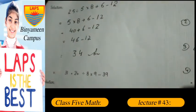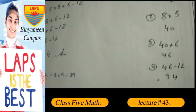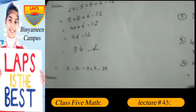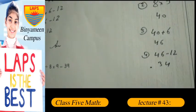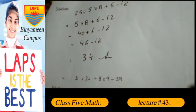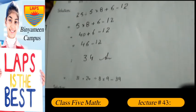Now 40 plus 6 minus 12. Now 40 plus 6 is equal to 46, third part. Then 46 minus 12. Now 46 minus 12 is equal to 34.